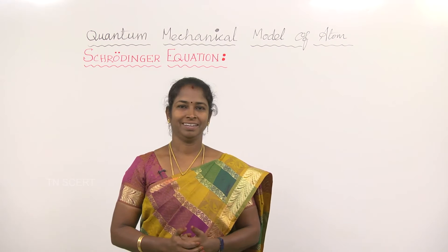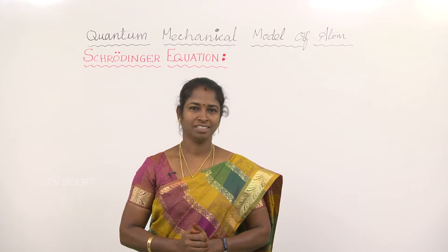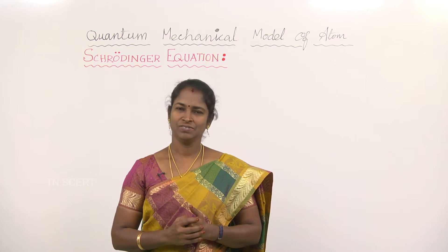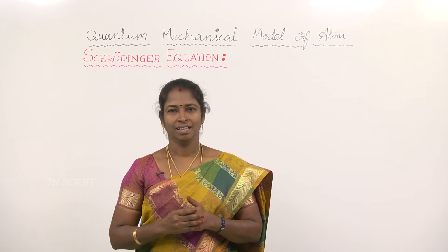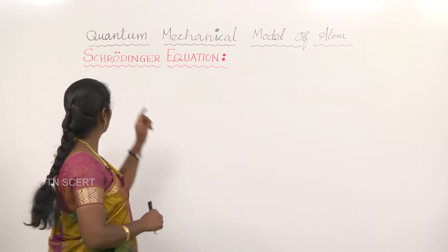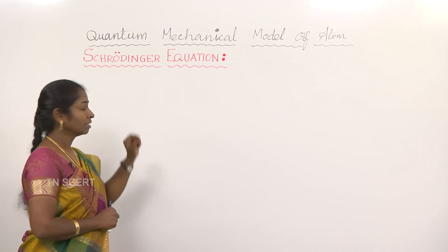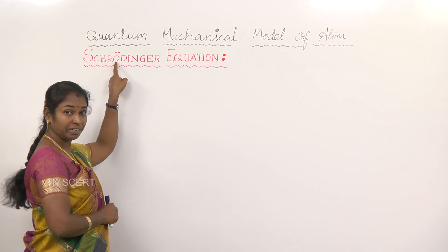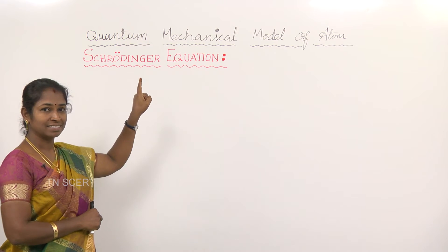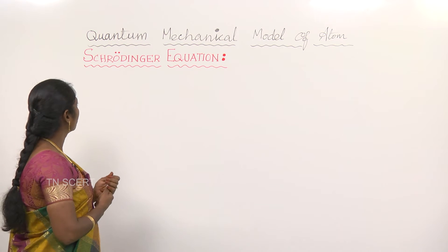Quantum Mechanical Model of Atom: Schrödinger Equation. This is not too tough; it is very easy to understand. First of all, what is the meaning of the two dots on the O? This is an alphabet in the Latin language. It should be pronounced as 'OE' — Schrödinger Equation.